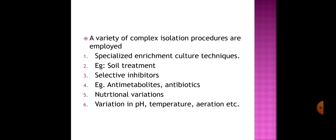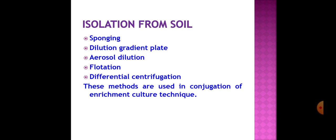To isolate microorganisms from natural resources, a variety of complex isolation procedures are employed, the best being specialized enrichment culture techniques. Examples include soil treatment, use of selective inhibitors like antimetabolites and antibiotics, variation in nutritional composition by adding desirable nutrients, or variation in physiological parameters like pH, temperature, and aeration. Techniques used for soil isolation include sponging, dilution, gradient plate or viable count method, aerosol dilution, floating, and differential centrifugation, usually used in conjunction with enrichment culture techniques.